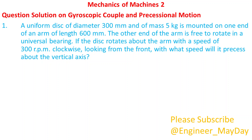A uniform disc of diameter 300mm and of mass 5kg is mounted on one end of an arm of length 600mm. The other end of the arm is free to rotate in a universal bearing. If the disc rotates about the arm with a speed of 300rpm clockwise, looking from the front, with what speed will it precess about the vertical axis?